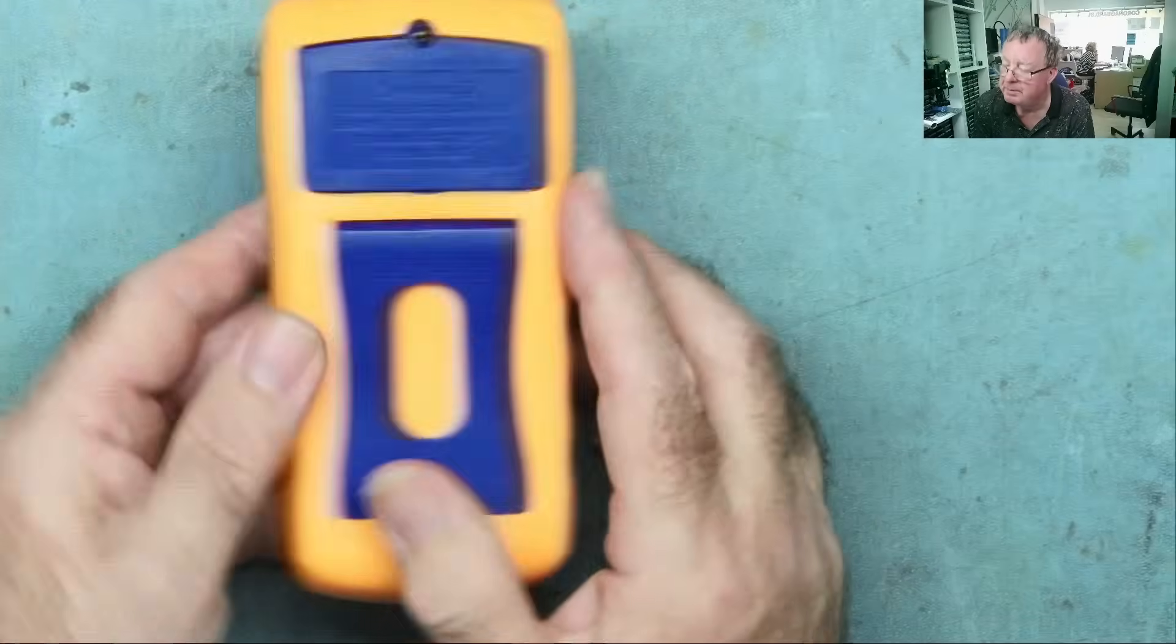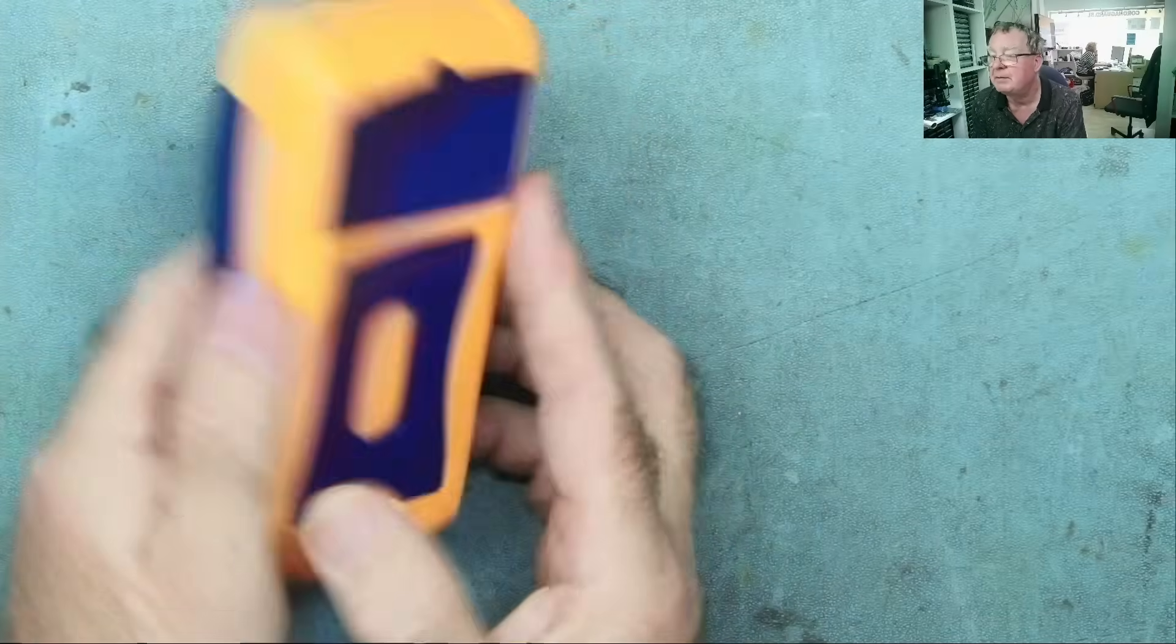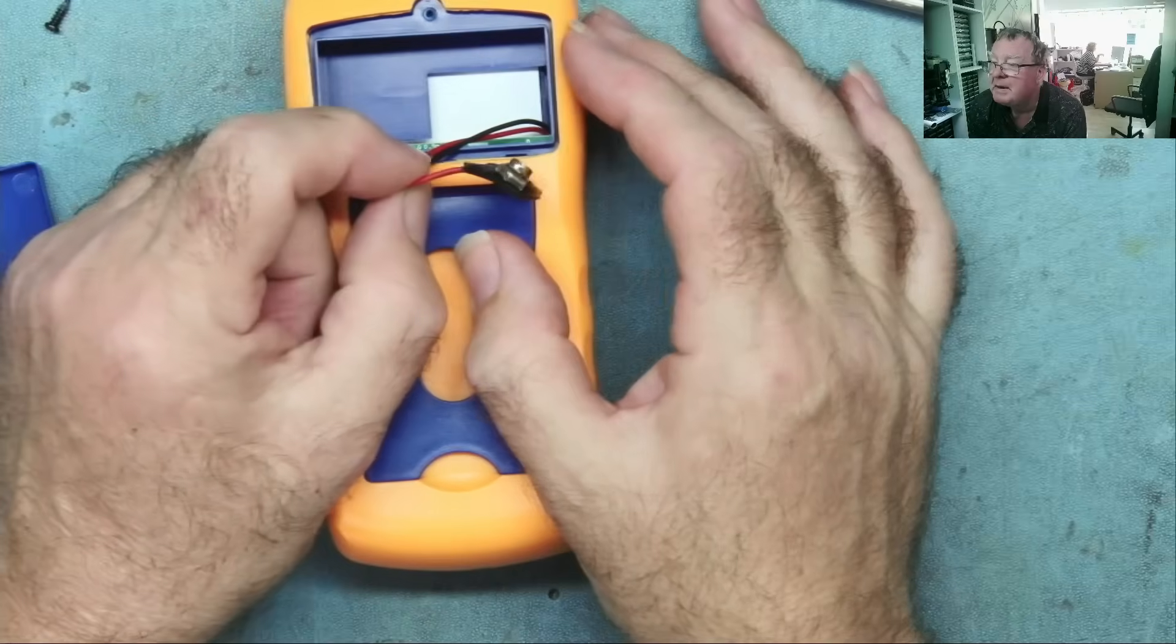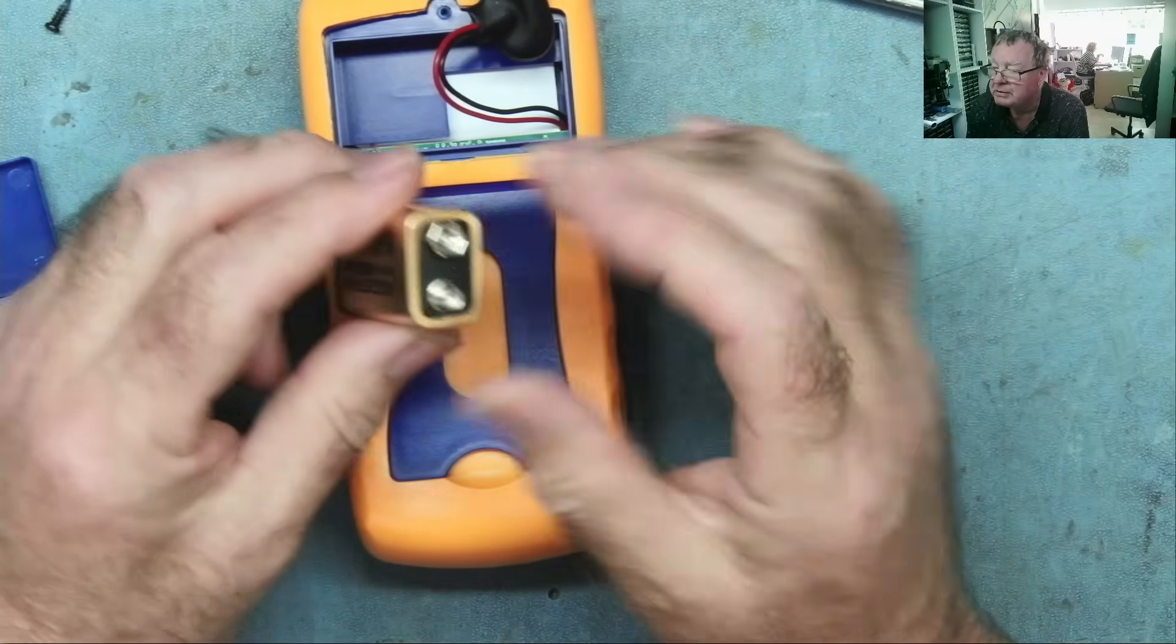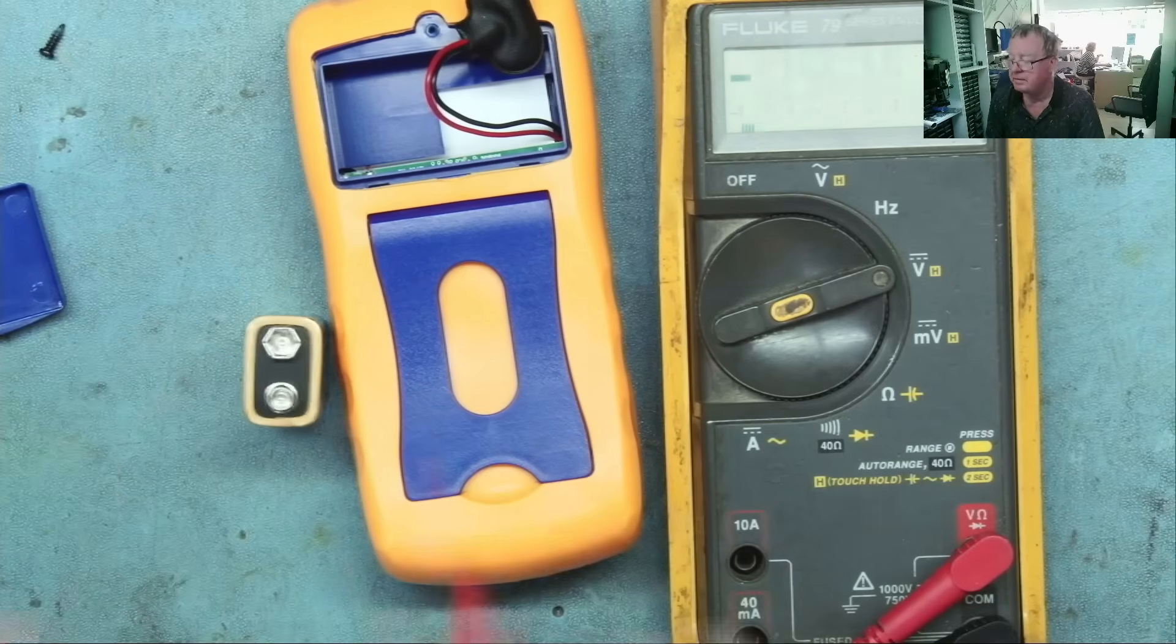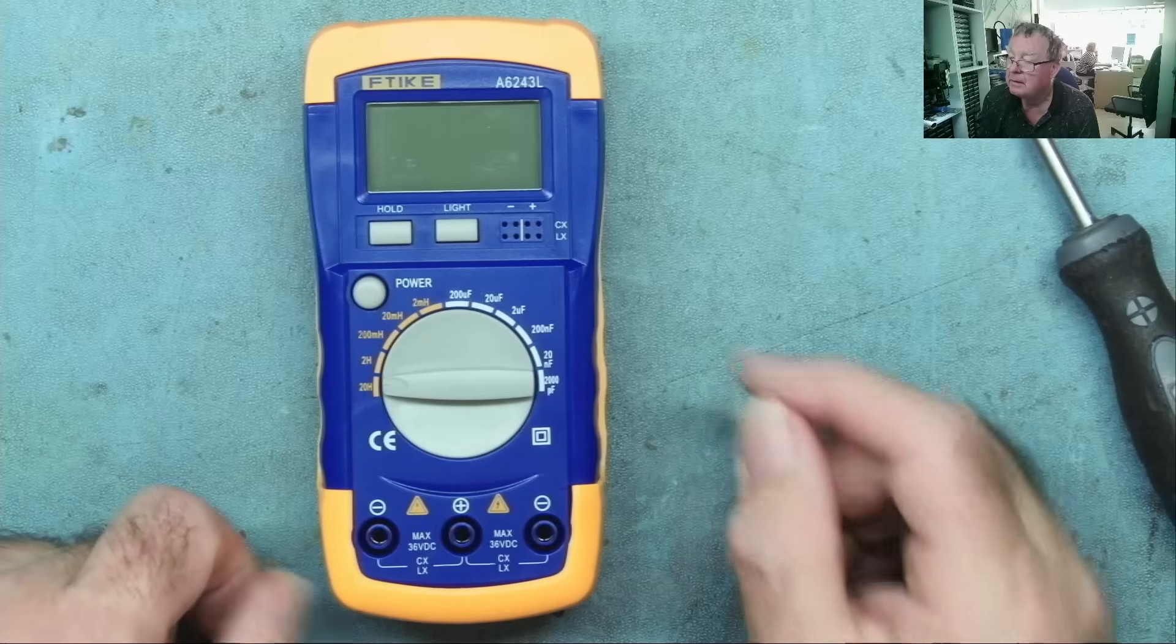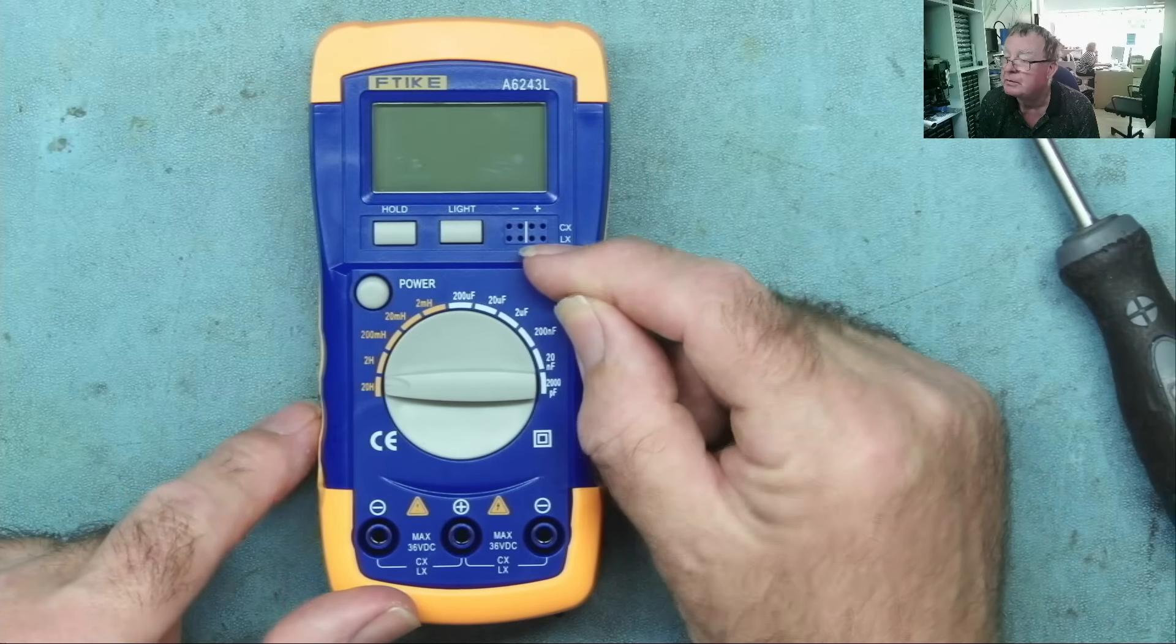This meter doesn't come with batteries, so it's not a rechargeable type thing. Let's have a quick look. This is a PP3. And I have one in my stash of batteries. That's a new one, 9.76 volts.